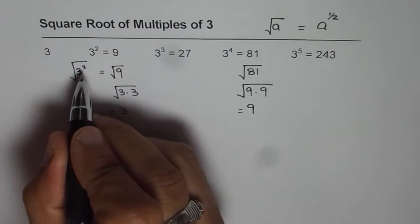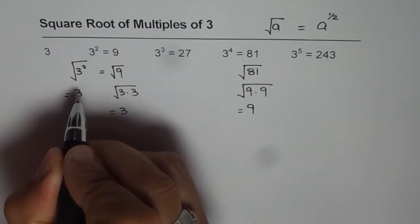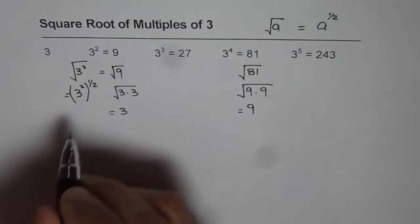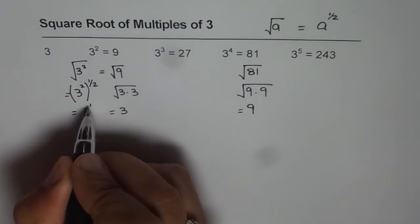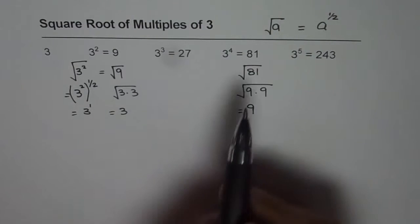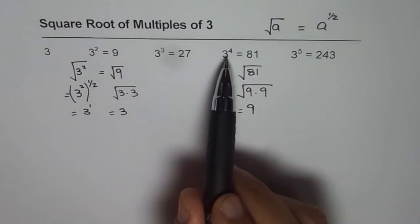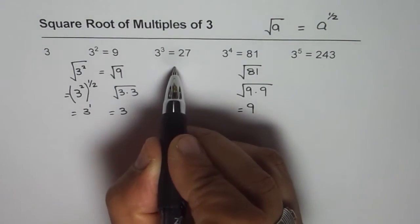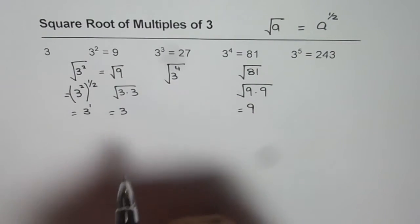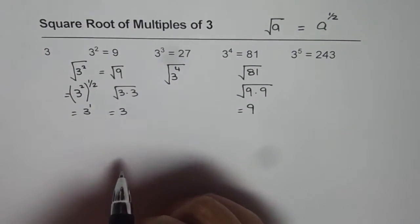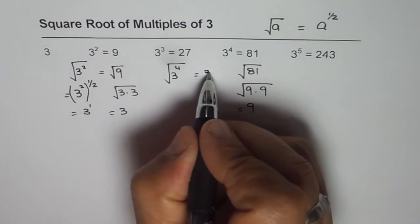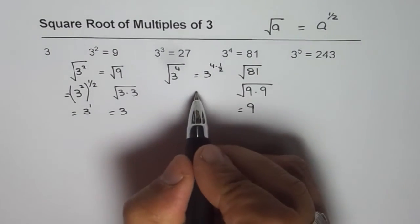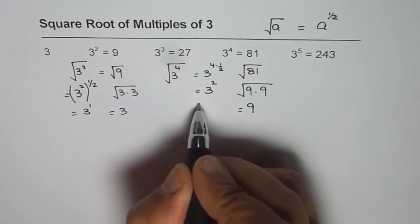So half of the exponent gives us the answer. What is half of 2? We have 3 squared and we take half of that exponent — half of 2 is 1 — so we get 3 to the power of 1, which is 3. Square root can be written as half of the exponent. For example, for 3 to the power of 4, the square root equals 3 to the power of 4 times one-half. Half of 4 is 2, so we get 3 squared, which equals 9.